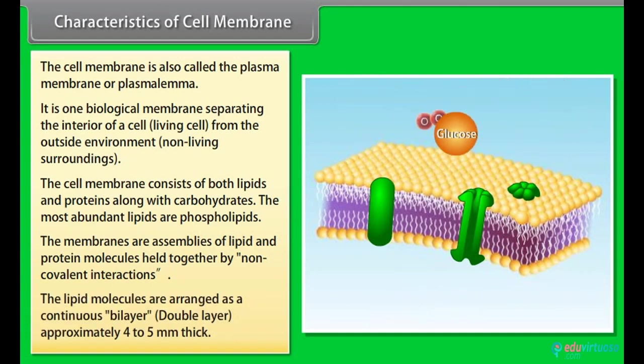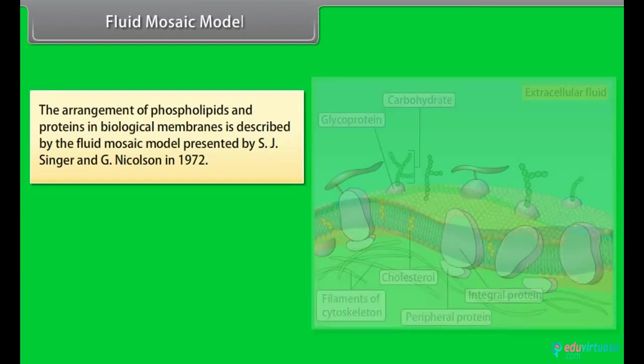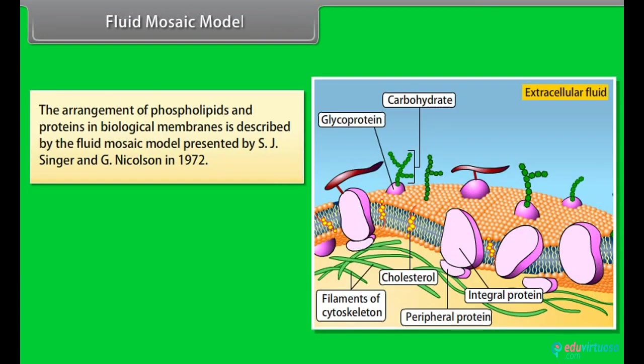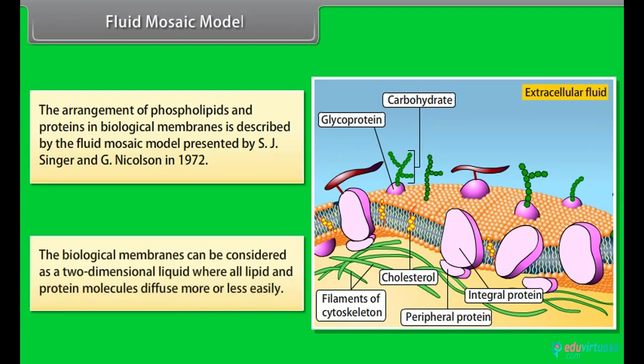Fluid mosaic model: The arrangement of phospholipids and proteins in biological membranes is described by the fluid mosaic model presented by S.J. Singer and G. Nicholson in 1972. The biological membranes can be considered as a two-dimensional liquid where all lipid and protein molecules diffuse more or less easily.